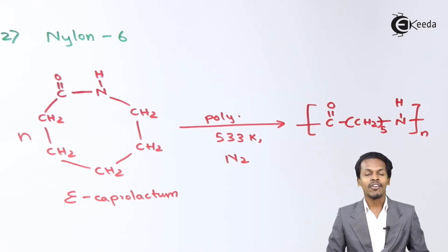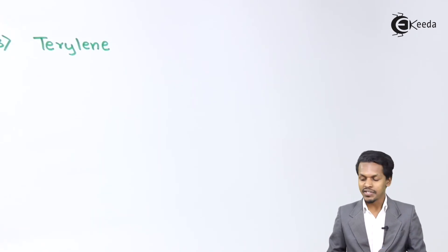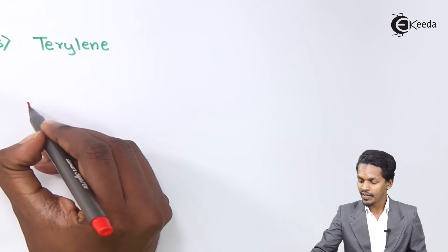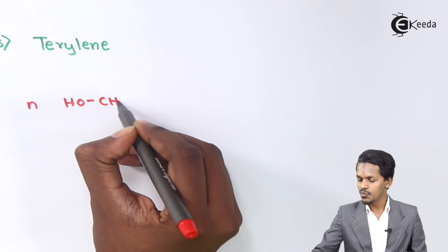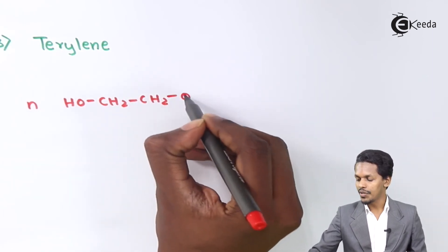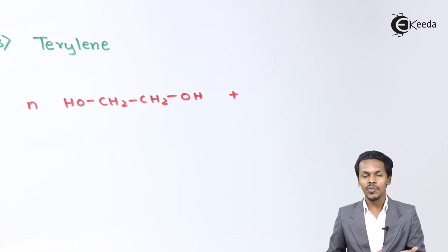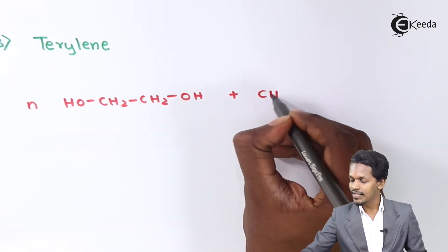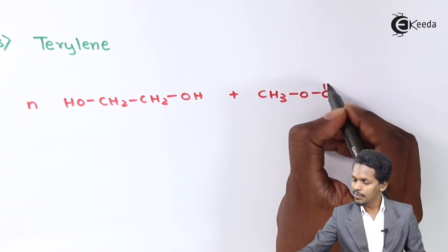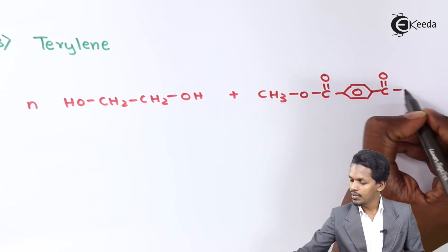The next example is the preparation of Dacron (also called Dacron or polyester). The monomers used are ethylene glycol — HO-CH2-CH2-OH — and DMT (dimethyl terephthalate), which has the structure CH3-O-C(=O)-C6H4-C(=O)-O-CH3.